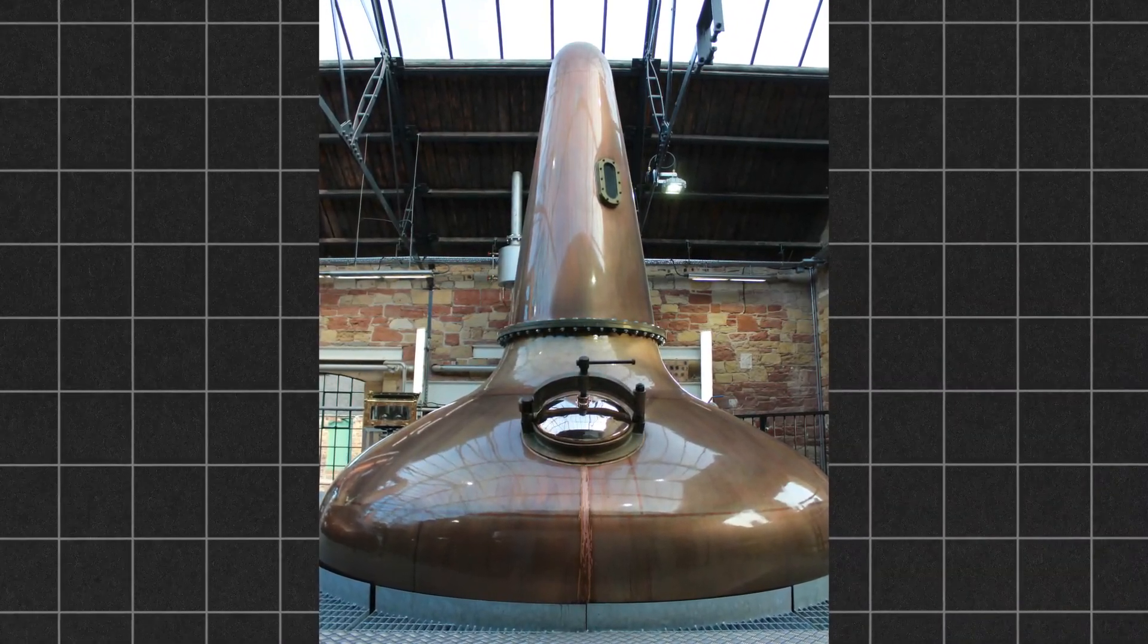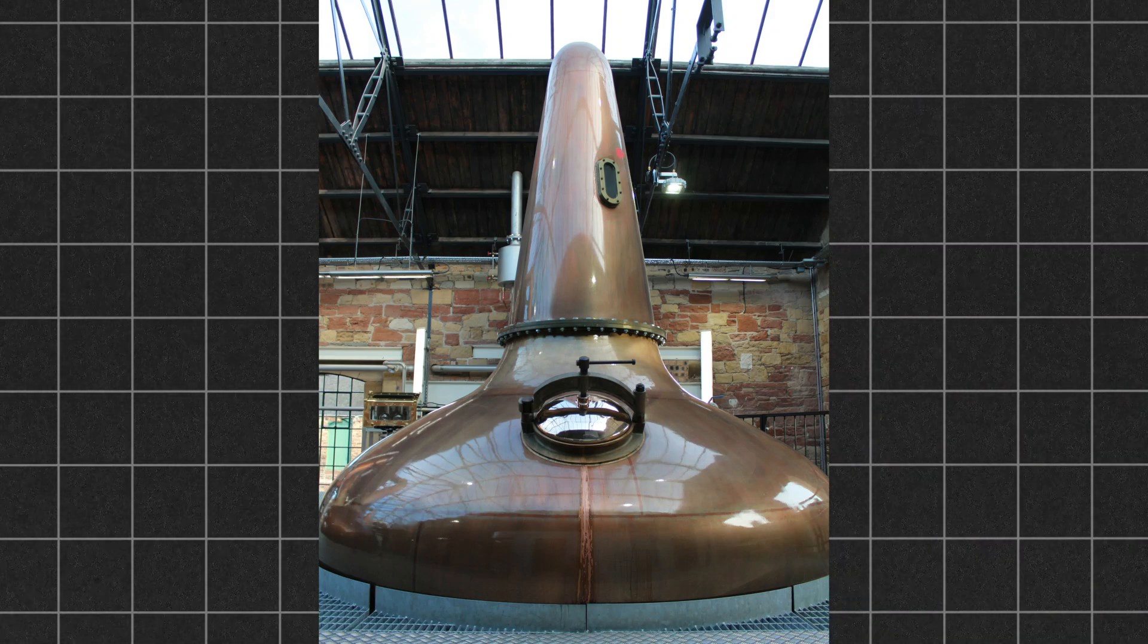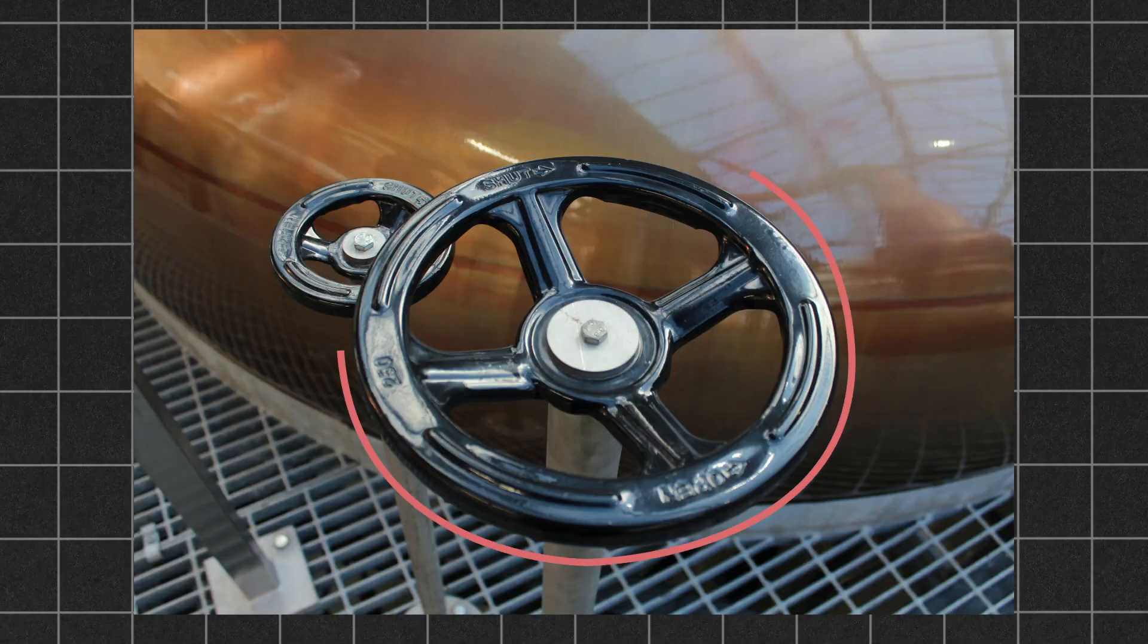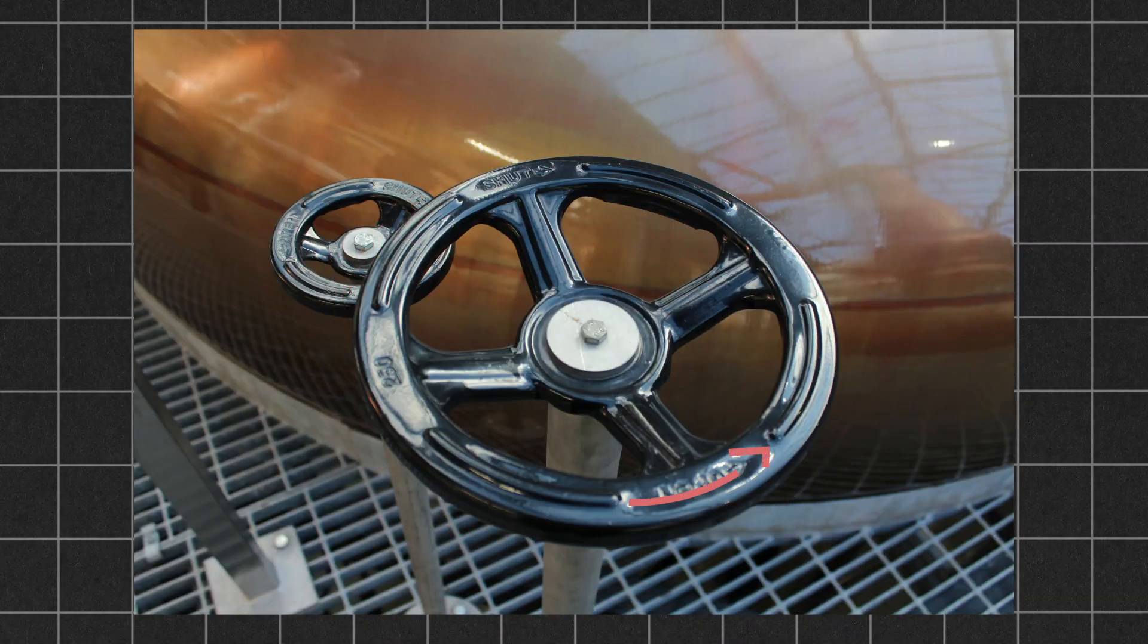At the start of the distillation, the distiller can look into the sight glass and turn down the heat when they see the wash frothing up in the sight glass.